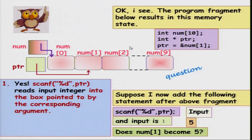scanf("%d", ptr) really does work like scanf("%d", &num[1]). It reads the value input by the user, looks up ptr — which is an address — goes to that address and stores the value there. So now we can clarify a long-standing mystery: the & operator in the case of scanf. We can say that scanf's second argument is a pointer which says where to put the input from the user.